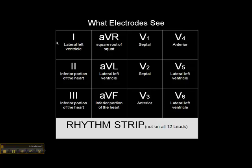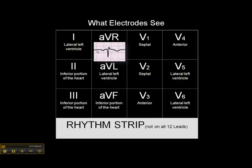You'll notice here that under AVR, I said that it represents the square root of squat. That's probably true when it comes to interpretation of acute myocardial infarct, but there is value to AVR. In particular, we look at AVR to verify that our lead placements are correct. The P wave and QRS should be inverted normally in AVR, and if they're not, chances are your limb leads are off.